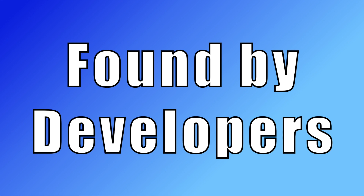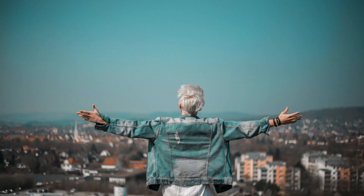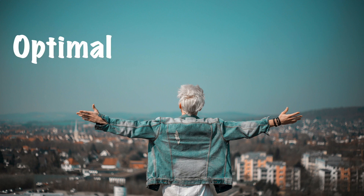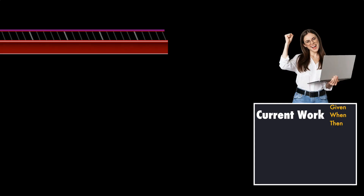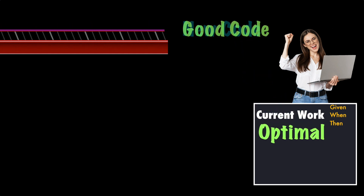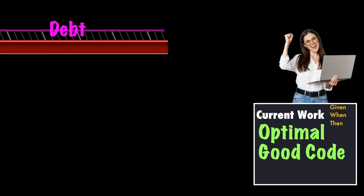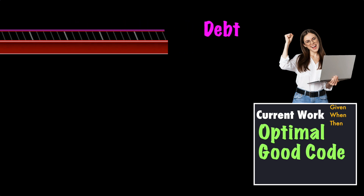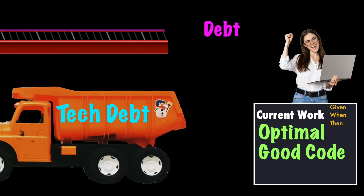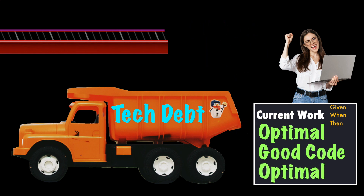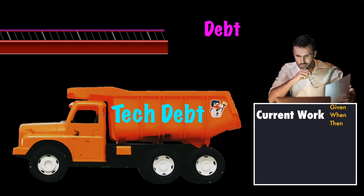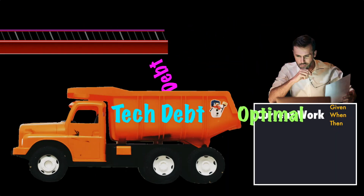Technical debt can be encountered in existing code — sometimes it was once optimal, and other times it was poorly written. While working on your current story, your goal is to write good optimal code. When existing technical debt is discovered, you have some resolution options: fix all of the discovered debt as part of your current work, or fix some of the discovered debt as part of your current work.